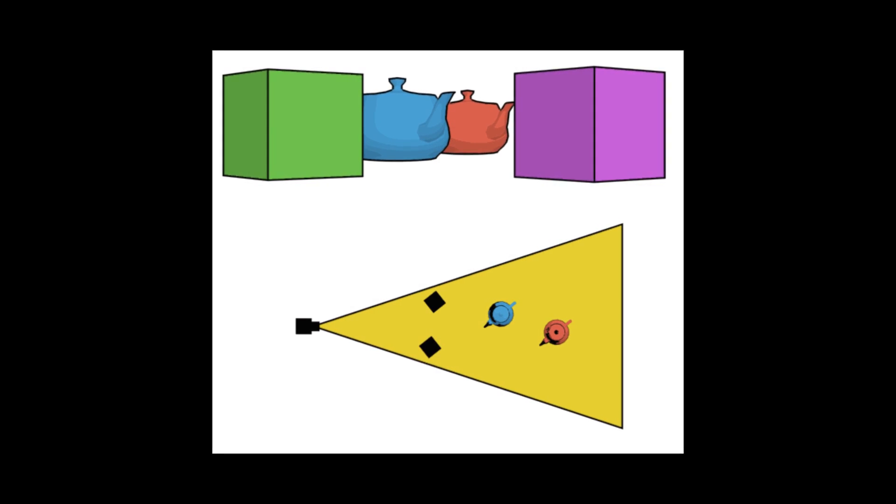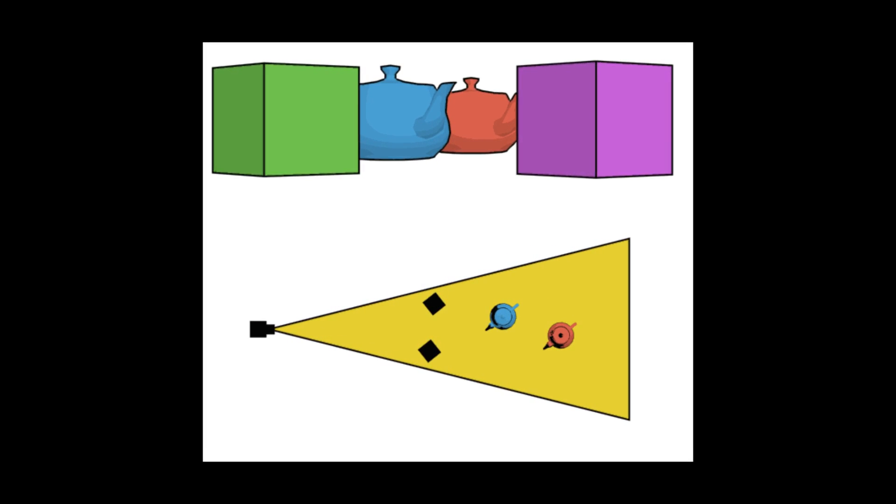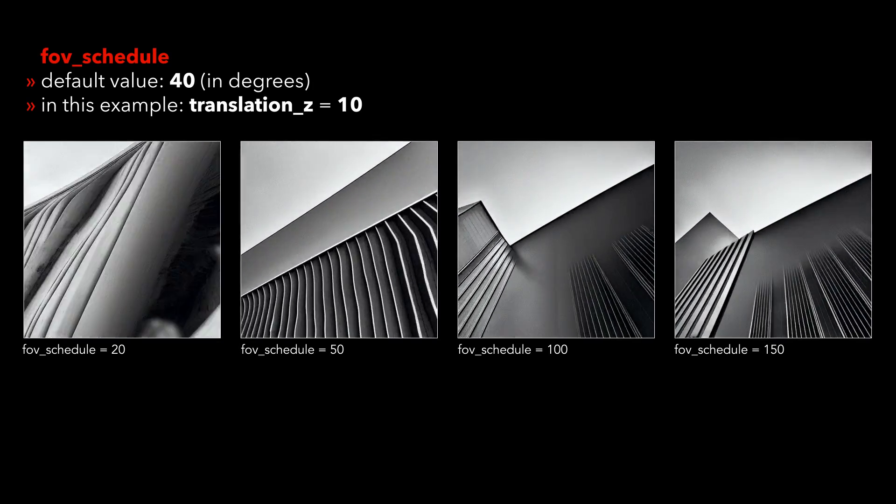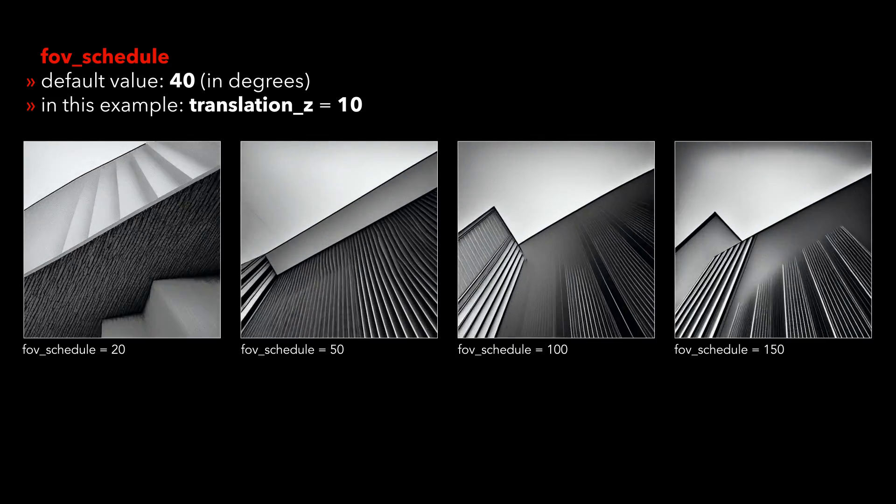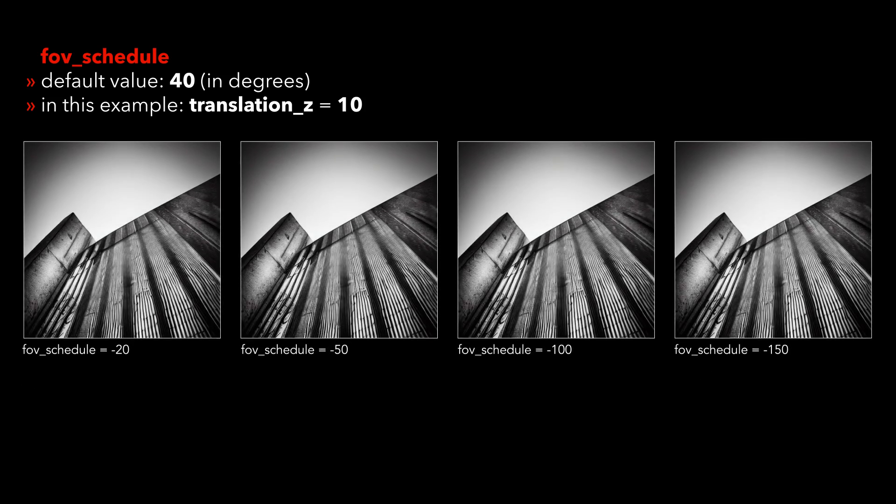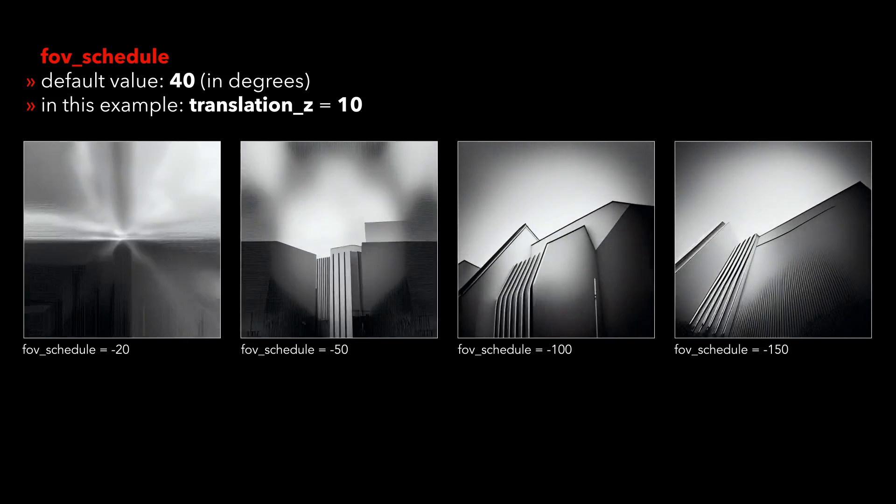Changing the FE value will also influence how the speed of translation Z movement is perceived. A small value means a narrow field of view, and therefore fast movement. Whereas a high value means a wide focal view, and slow movement. A negative value will result in a zoom out with the same value strengths.